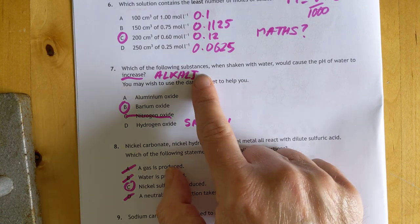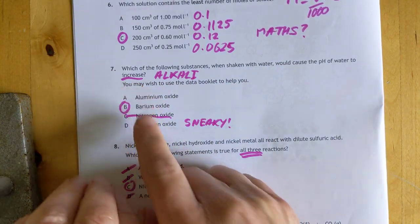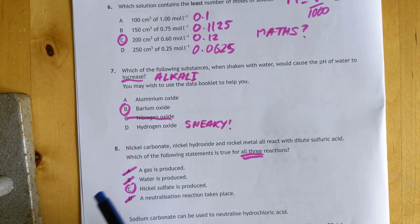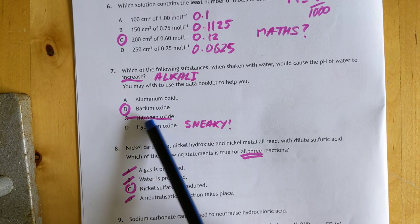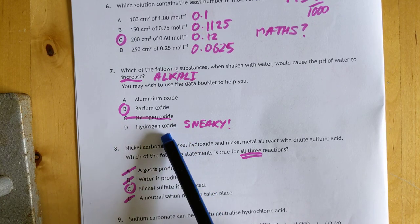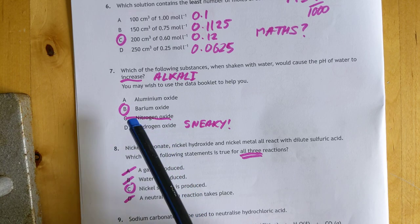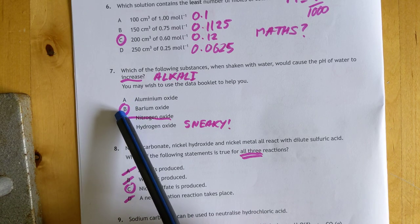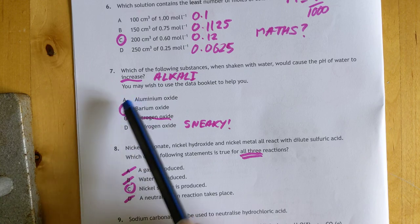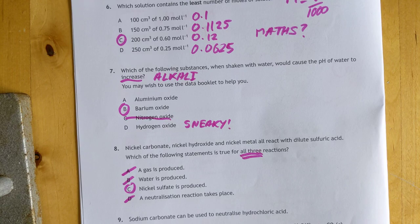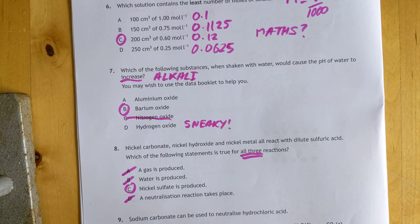Number seven: which substance shaken with water would cause the pH to increase? That means the substance is an alkali. Alkalis are metal oxides, so we can scrub out C instantly, that's a non-metal oxide. D is sneaky, hydrogen oxide is water, so shaking water with water won't change its pH. Barium oxide and aluminum oxide are both metal oxides, but in the data book, aluminum does not dissolve. The answer is B.